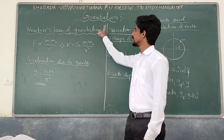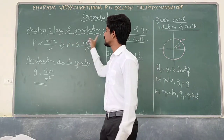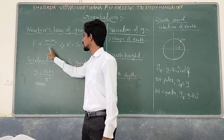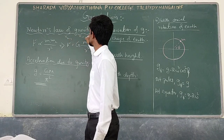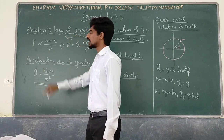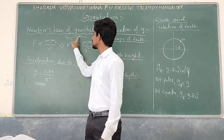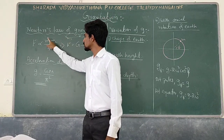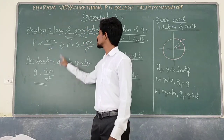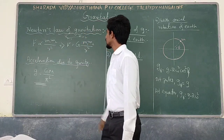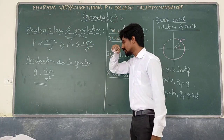Today we can revise the chapter gravitation. We start with Newton's law of gravitation. If there are two masses M1 and M2 separated by distance R, then the gravitational force between M1 and M2 is directly proportional to the product of their masses and inversely proportional to the square of the distance. So we can write F is equal to G into M1 M2 by R square.